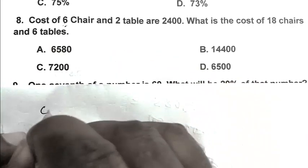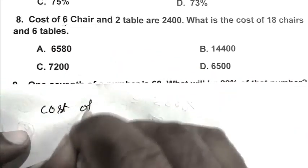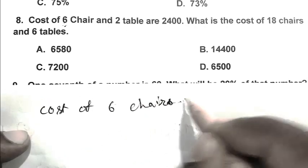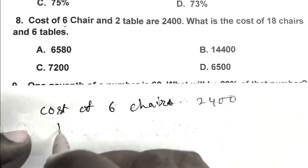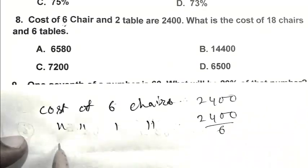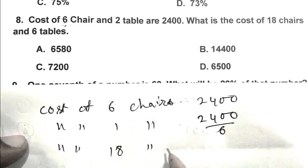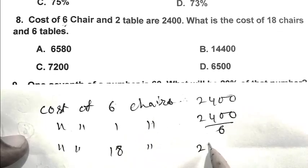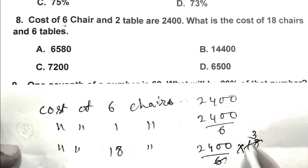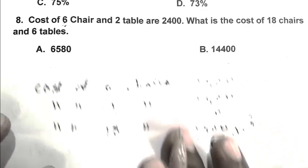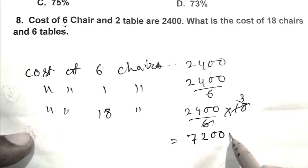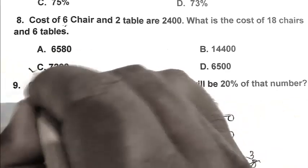Cost of 6 chairs is 2,400. Cost of 1 chair is 2,400 upon 6. Cost of 18 chairs is 2,400 upon 6 multiplied by 18, which equals 7,200 rupees. C is the right answer.